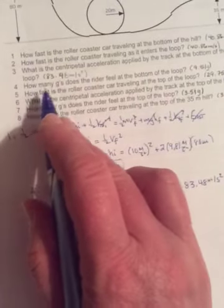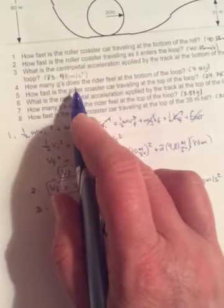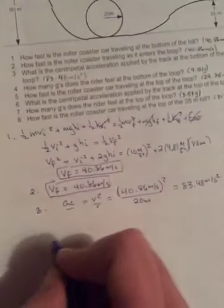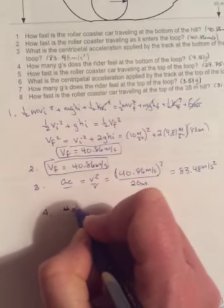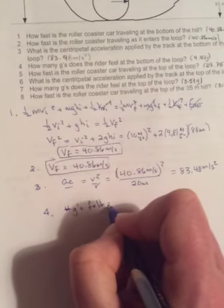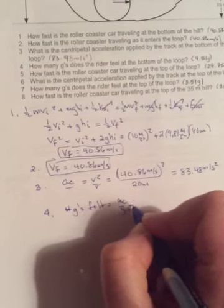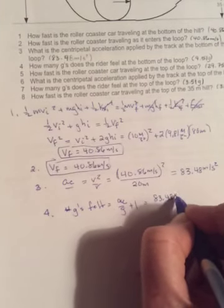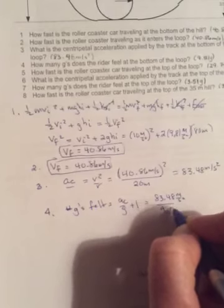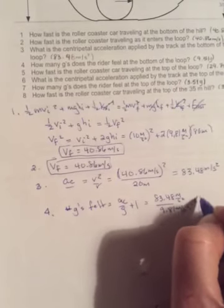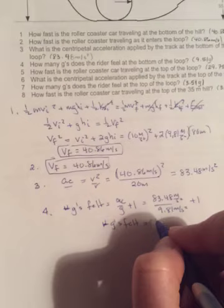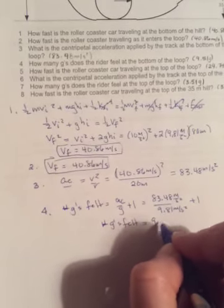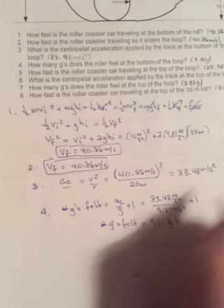Now the one I asked you to skip, we can now do. How many G's does the rider feel at the bottom. So just a couple minutes ago, we said, at the bottom of the loop, it's ac over g plus one. So number of g's felt is equal to ac over g plus one. So 83.48 meters per second squared divided by 9.81 meters per second squared plus one. And so we get our number of g's felt to equal 9.51 g's.